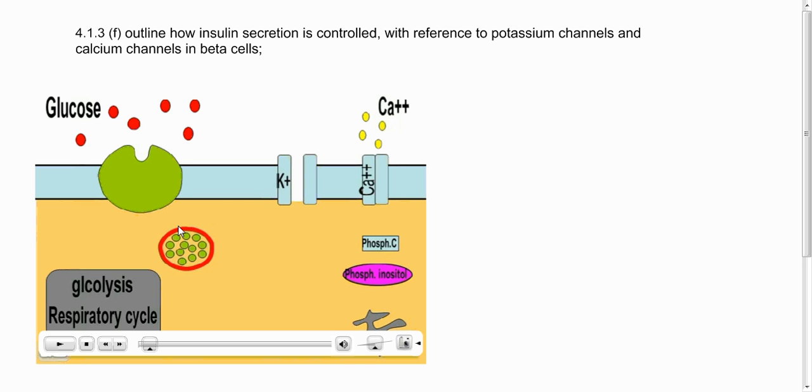Just to familiarize you with the animation we're going to use, the blue strip along the top here is the membrane of the cell that's going to release the insulin. Outside the membrane at the top in this white area is the exterior of the cell, and then the orangey yellow area is within the cell itself.